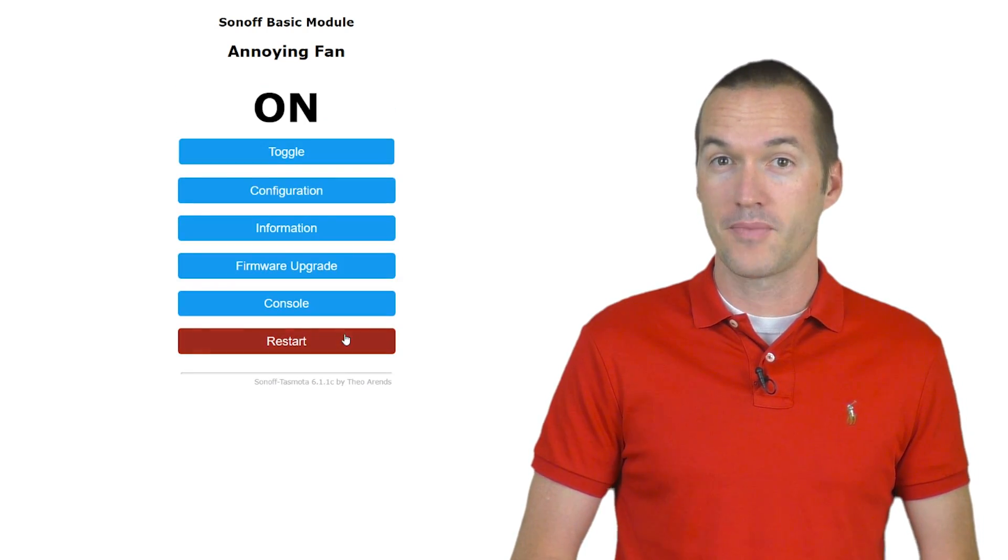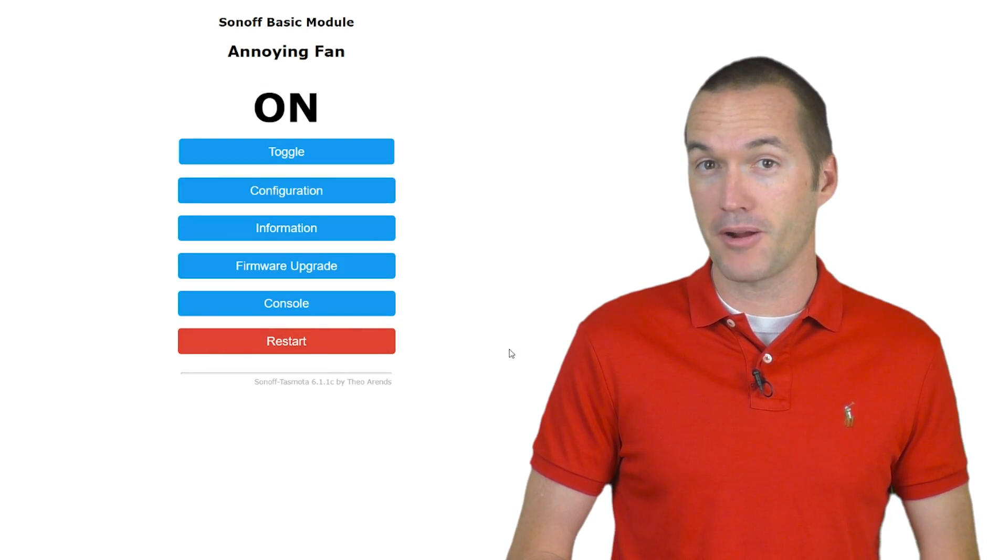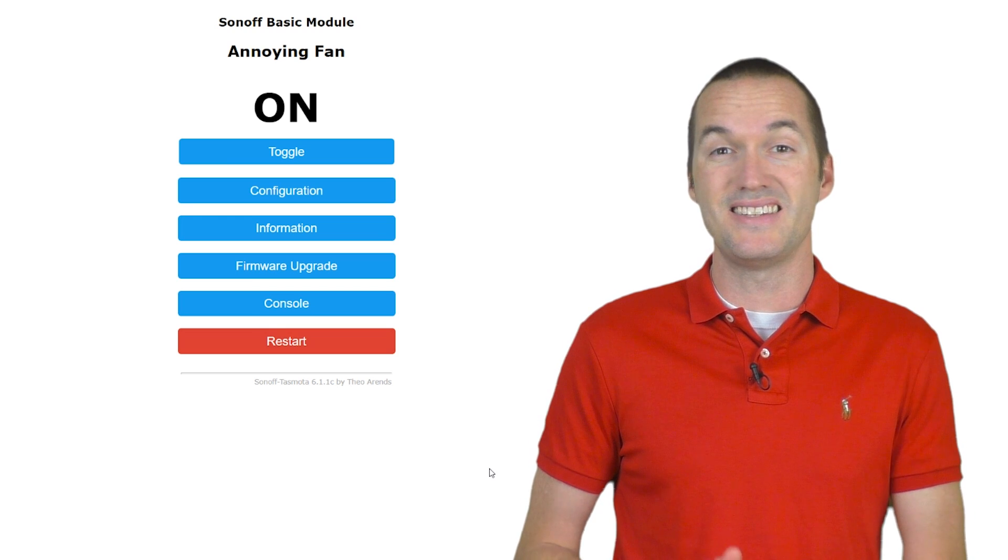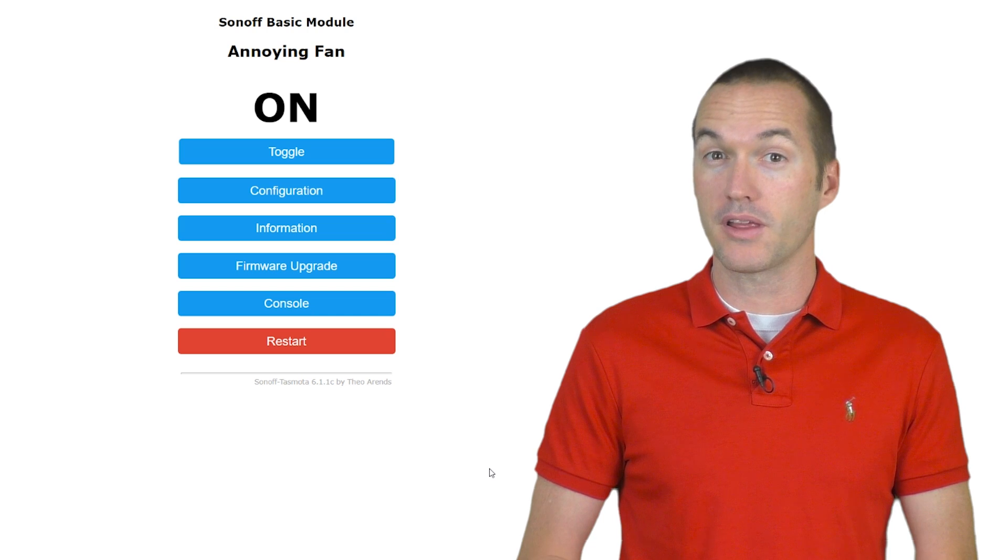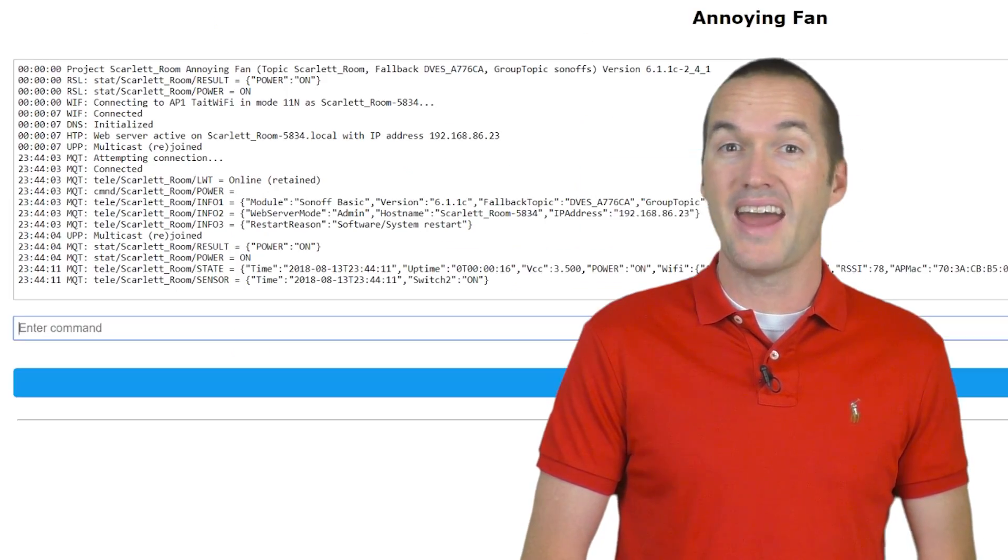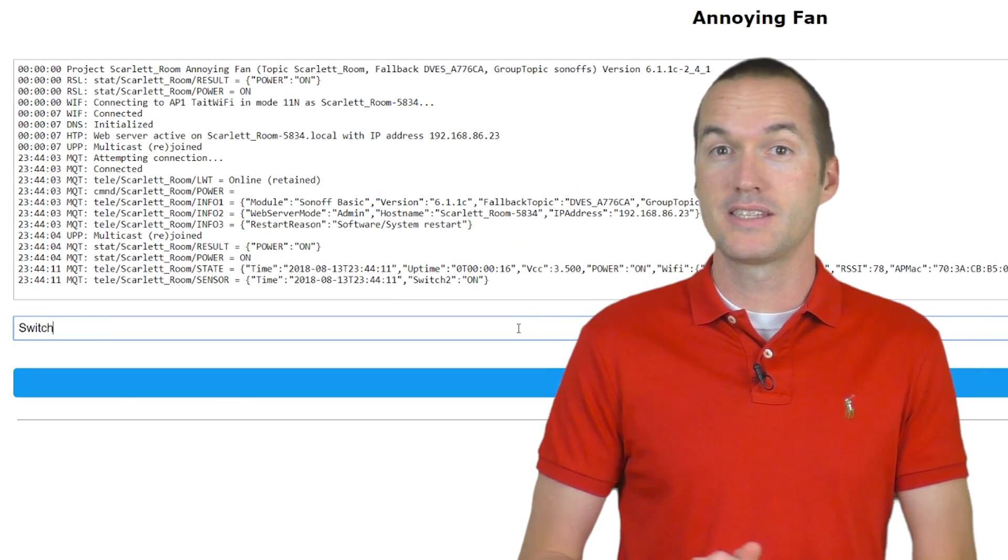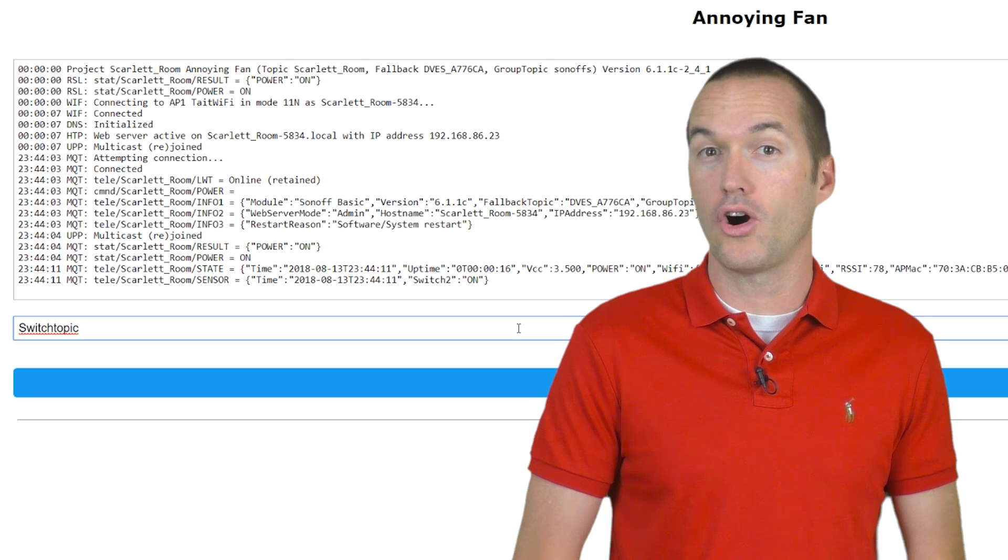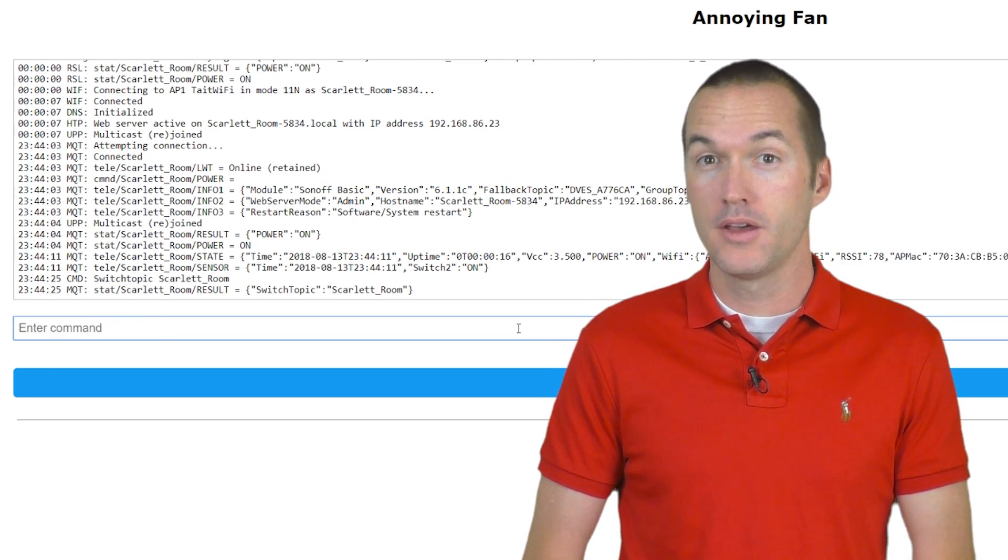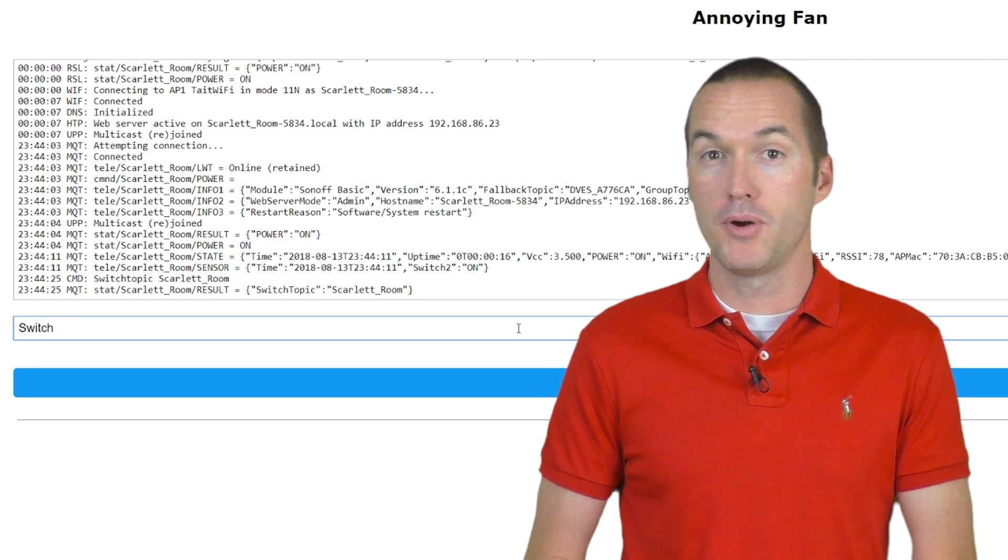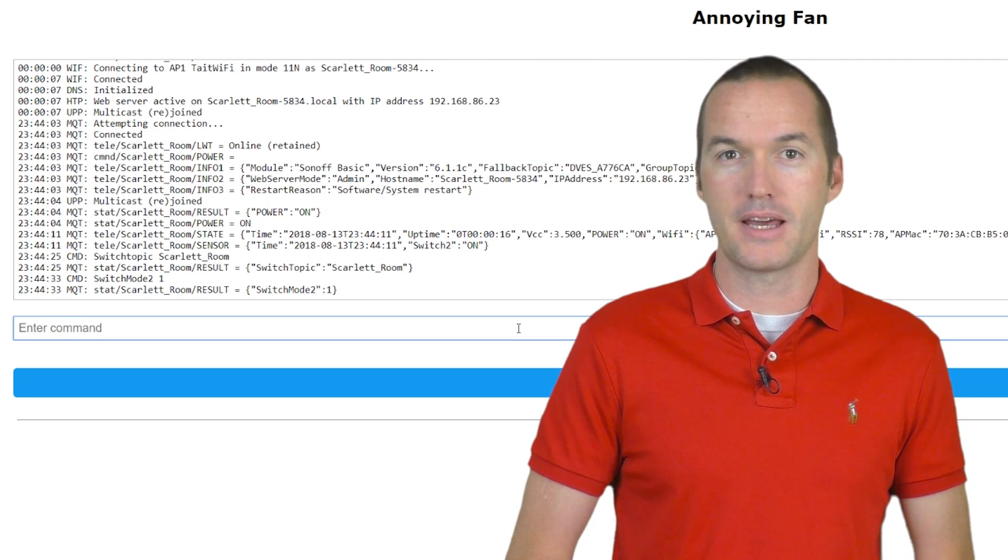Tasmota is going to think that you want Switch 2 to control the relay. So you'll notice that opening and closing your door will now shut off the device that you have connected. In my case, that's the air purifier. The next thing we need to do is decouple the switch from the relay. We'll do this using console commands. So click on Console in the main menu and then type SwitchTopic space and then whatever you want to call this door and hit Enter. It's probably a good idea to make sure you're in Switch Mode 1. So also type in SwitchMode2 space 1 and press Enter.